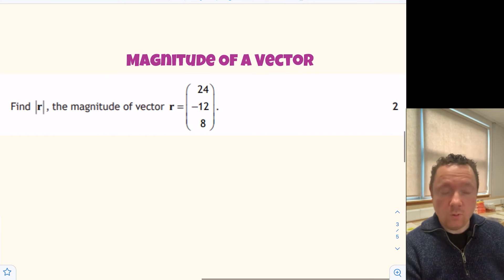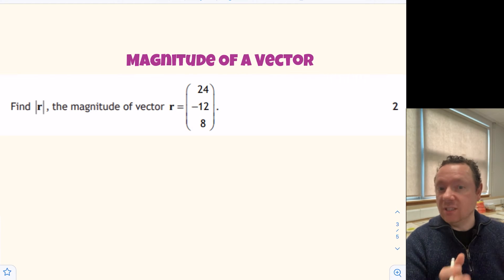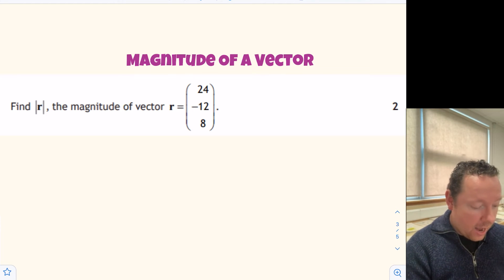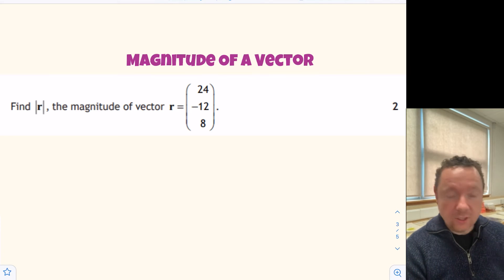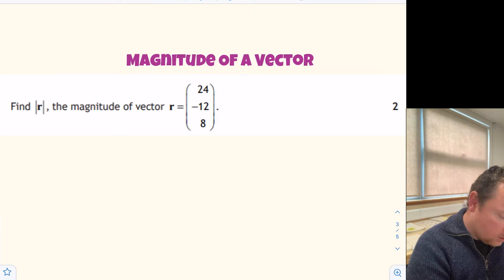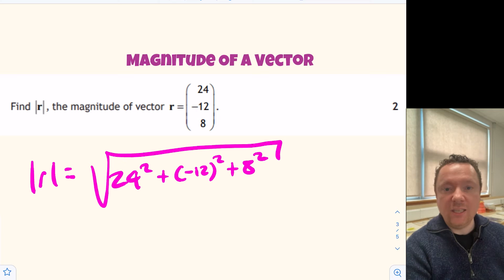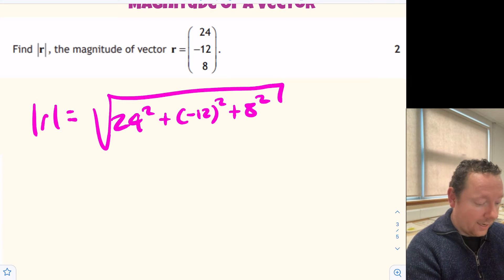And the last one, quite important this one, the magnitude of a vector. Find bar R. The bars mean the magnitude of the size of the vector. And R is given by this vector. So you've got 24 minus 12 and 8. So to find the magnitude of a vector, it actually works a bit like Pythagoras. Essentially it is Pythagoras. So it's the square root of all the numbers squared added together. In other words, the size of R for this one is equal to the square root of 24 squared plus minus 12 squared plus 8 squared. And you just get your calculator and work that out. Which equals the whole number answer 28.